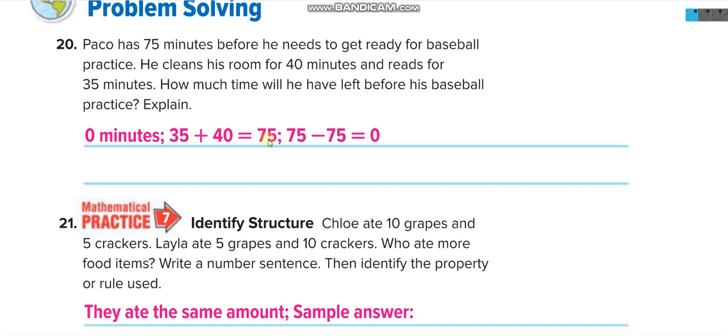So he cleans his room for 40 minutes and 35 minutes for reading. So 40 plus 35 equals to 75 total. He have 75 minutes, so 75 minus 75, 0 minutes left with your boys.